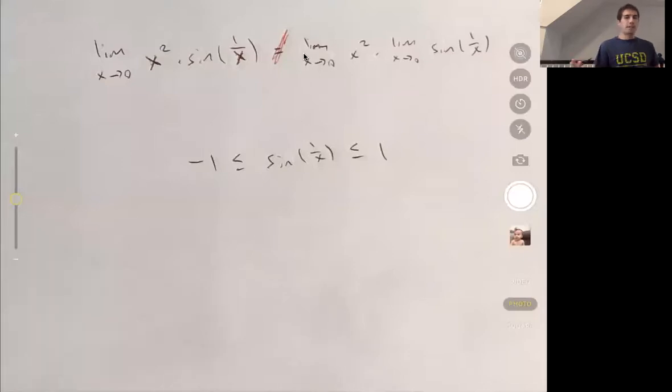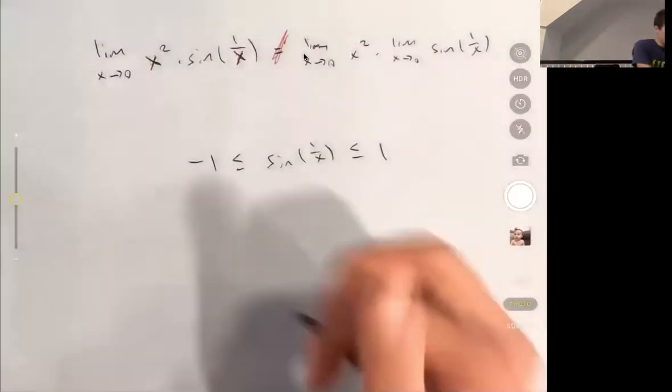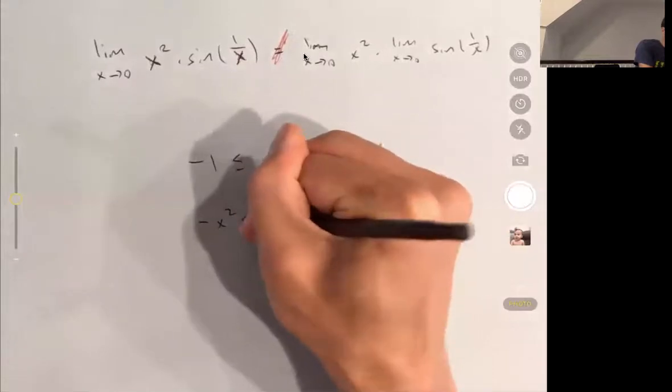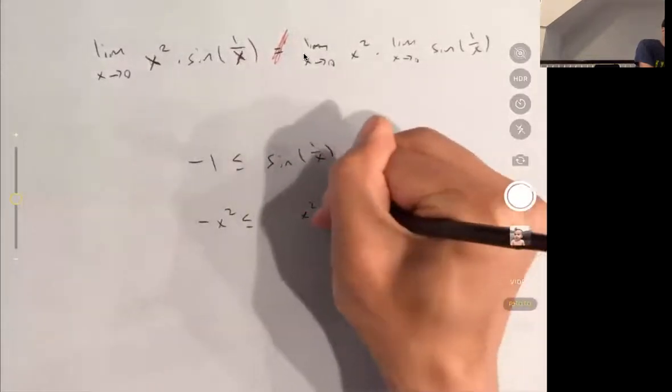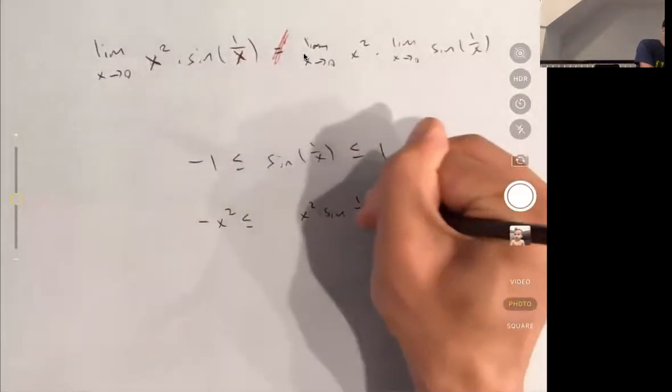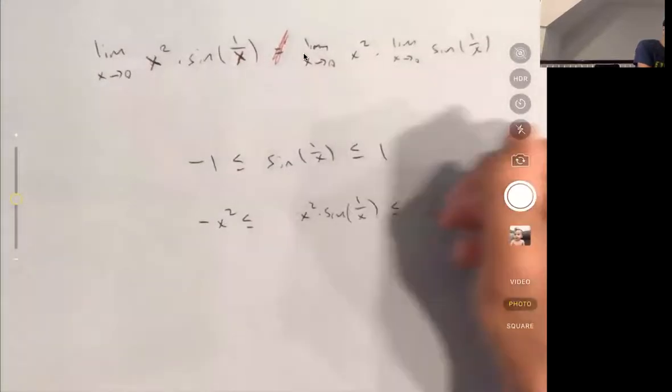And so if I multiply everything by a non-negative number, the inequality stays true. So I'm going to multiply everything here by x squared. So this says that negative x squared is less than or equal to x squared times sine of 1 over x, which is less than or equal to x squared.